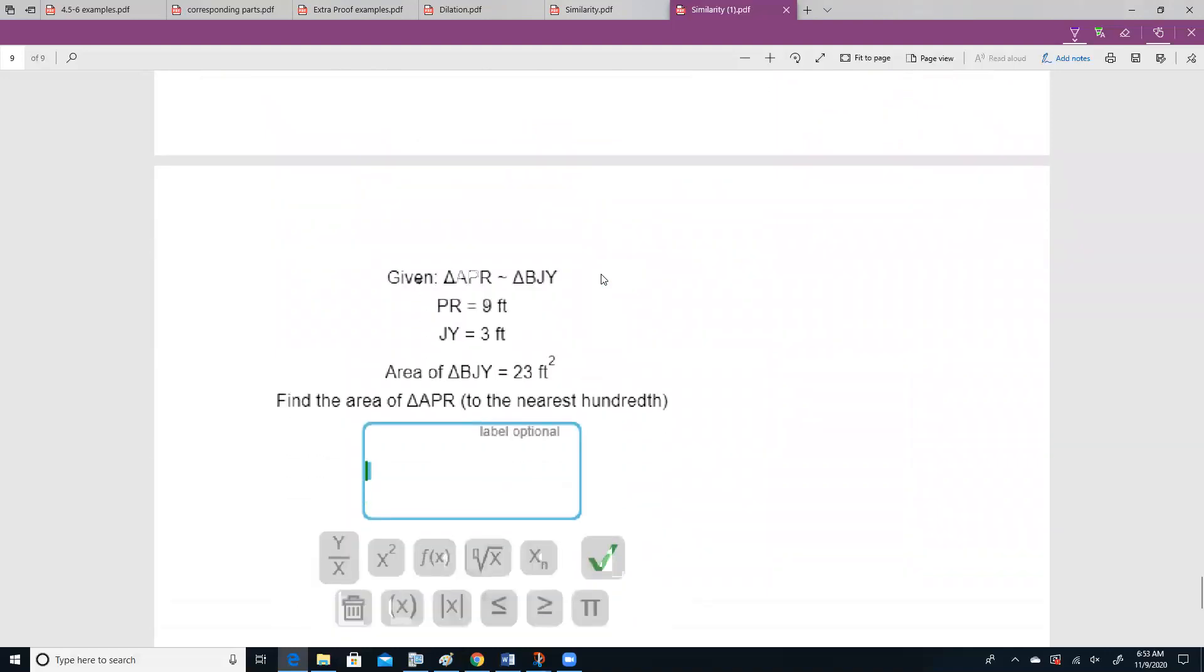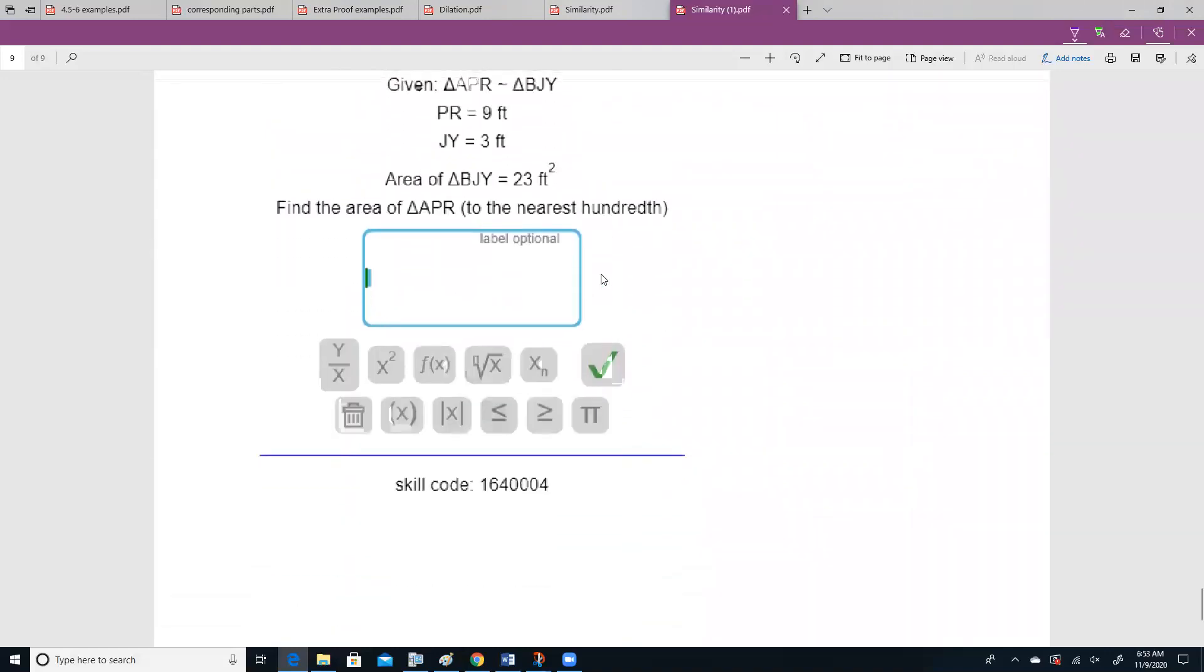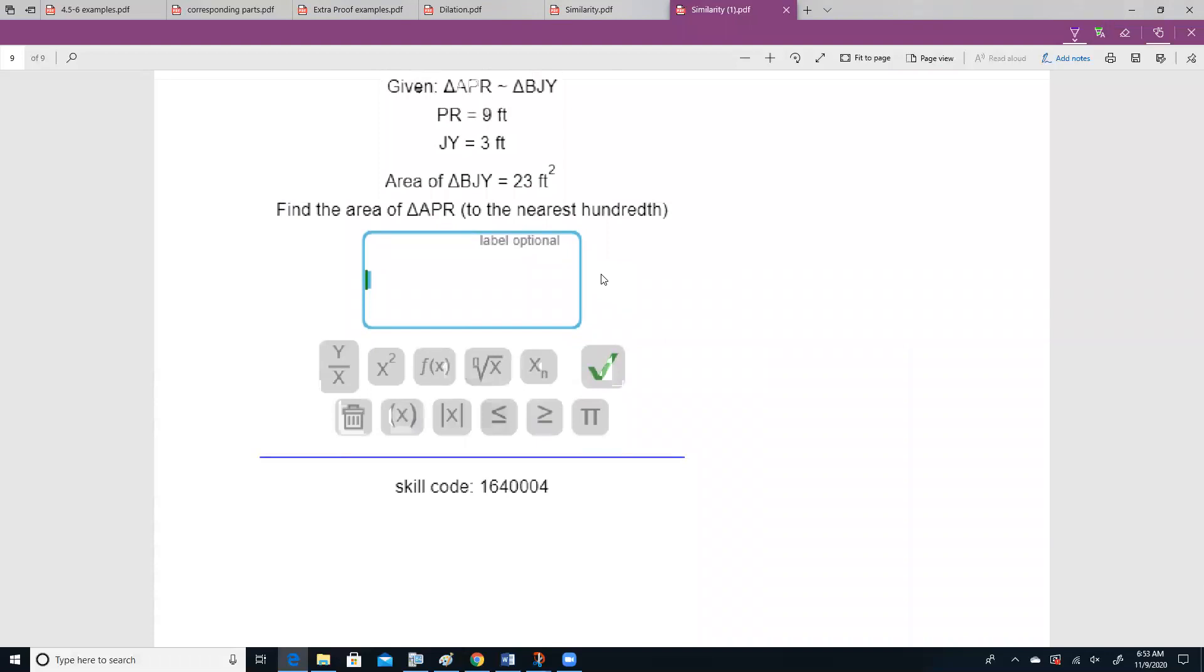Do that one last time. We are given the area of BJ. And over here, JY corresponds to that. So we're going from here to here. 3 times what scale factor gave me 9? We divide by 3 on both sides. The scale factor will be 3.